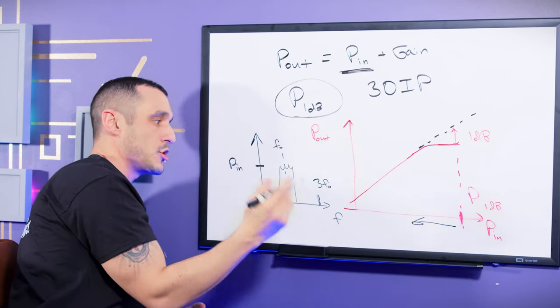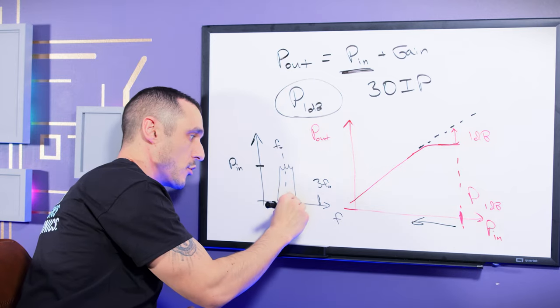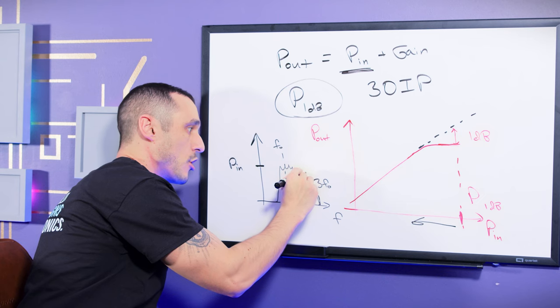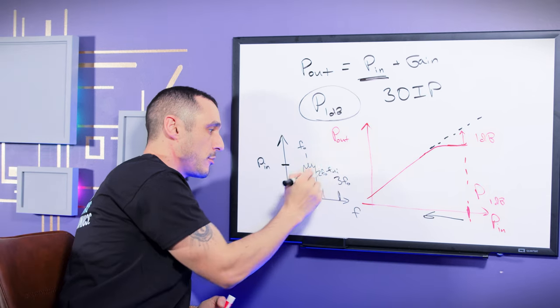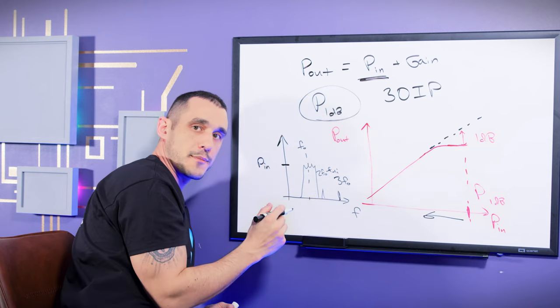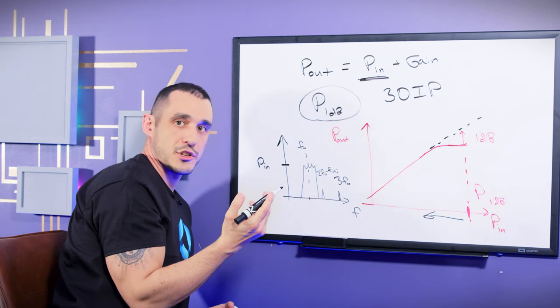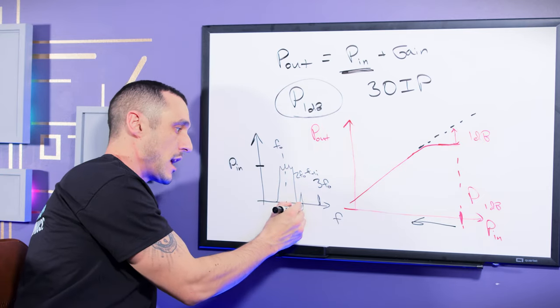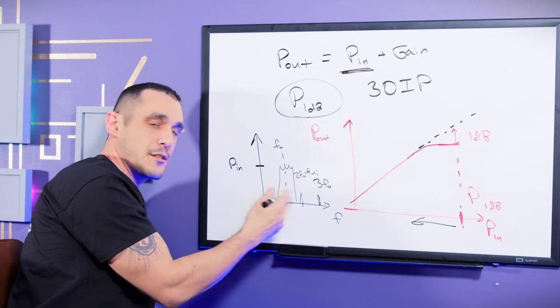And then there's going to be intermodulation products, which is essentially going to be something like 2F low minus F high. So there will be these intermediate peaks that can then propagate through to the output. And these are called intermodulation products. So the third order intermodulation products will lie right next to the intended bandwidth.